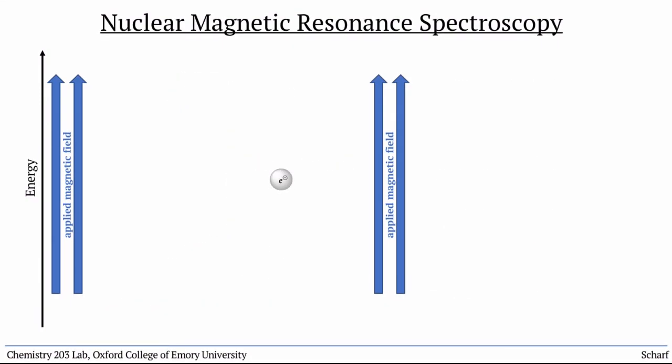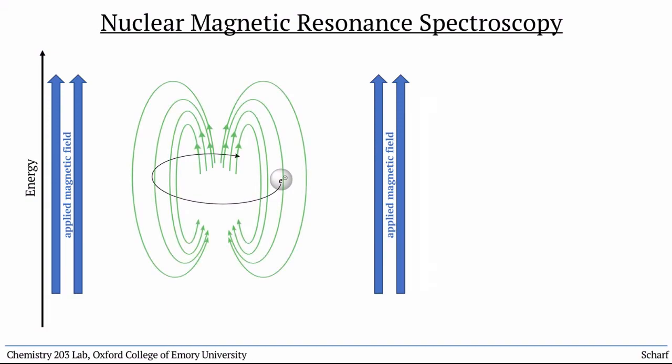To understand this, recall that electrons are themselves little charged particles. And when charged particles are placed in a magnetic field, they begin to oscillate, or move in tiny little circles within the orbitals they reside in. And charges that are oscillating generate their own magnetic fields.